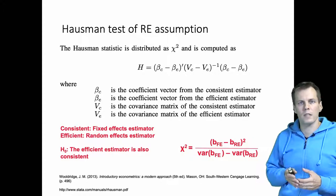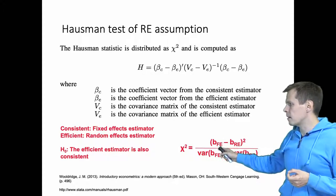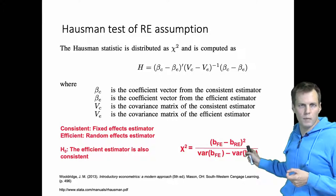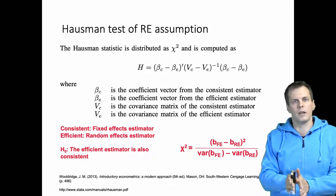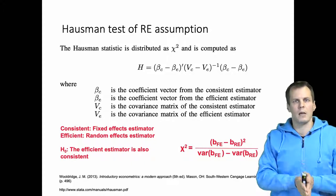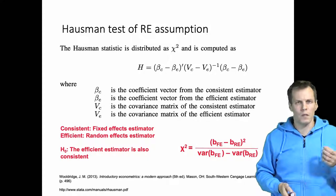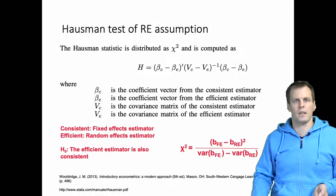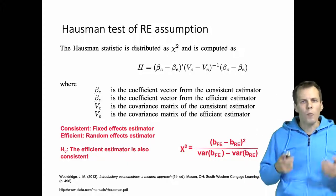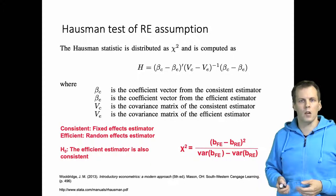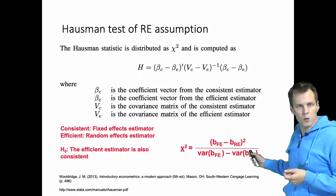The consistency of these two estimators guarantees that in large samples the fixed effects and random effects estimates will converge, so the difference between them will approach zero when the sample size is large enough. But in practice there's always some difference, and we take the square of that difference and compare it against the difference in variances, or squared standard errors, of the two estimates.